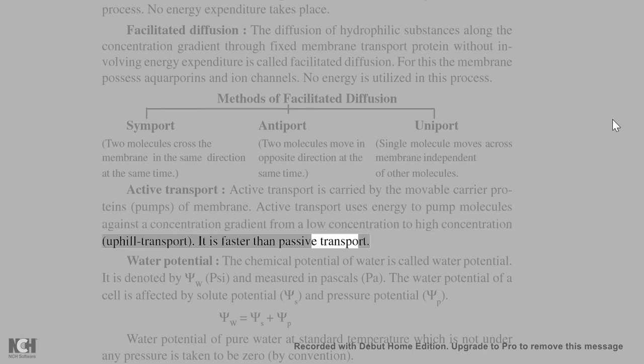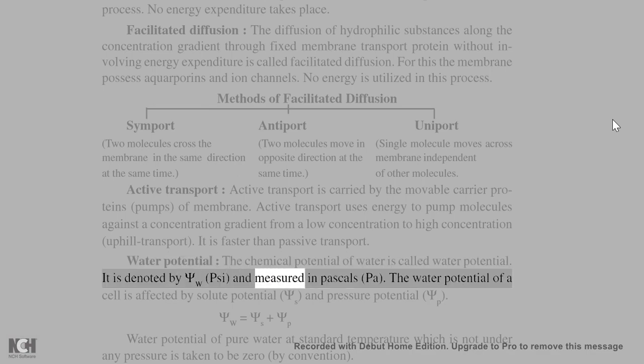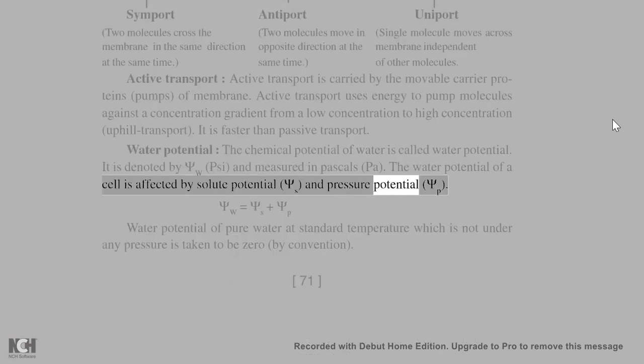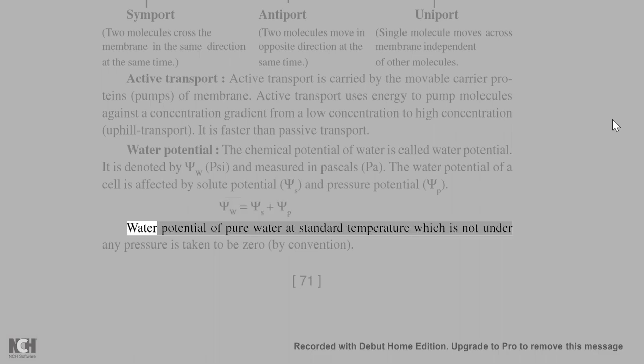Water potential: the chemical potential of water is called water potential. It is denoted by Ψw, psi, and measured in pascals, Pa. The water potential of a cell is affected by solute potential, Ψs, and pressure potential, Ψp. Ψw = Ψs + Ψp. Water potential of pure water at standard temperature which is not under any pressure is taken to be zero, by convention.